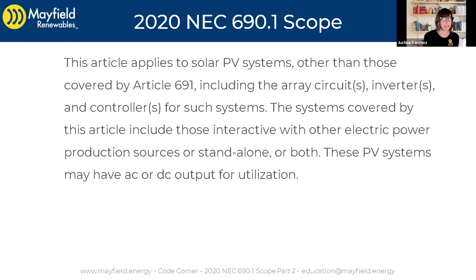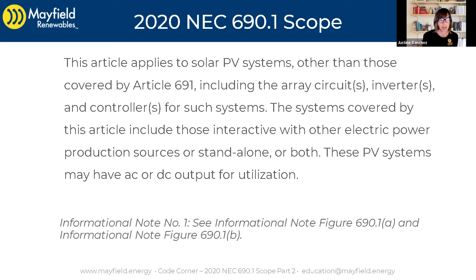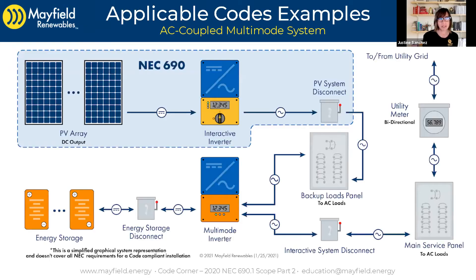These PV systems may have AC or DC output for utilization. So nothing new there, but it does point us to those diagrams within Article 690. So I'm going to jump into the ones that happen to have energy storage in them.